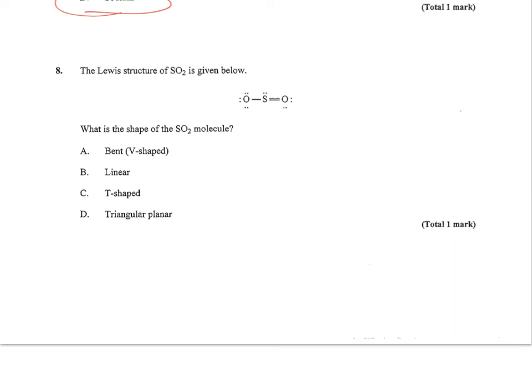Number eight says the Lewis structure of SO2 is given below. What is the shape? Well, they've drawn it linear, but you have to realize there's a lone pair here which is going to bend this tighter than linear. So it's going to be bent with about a 117° bond angle.